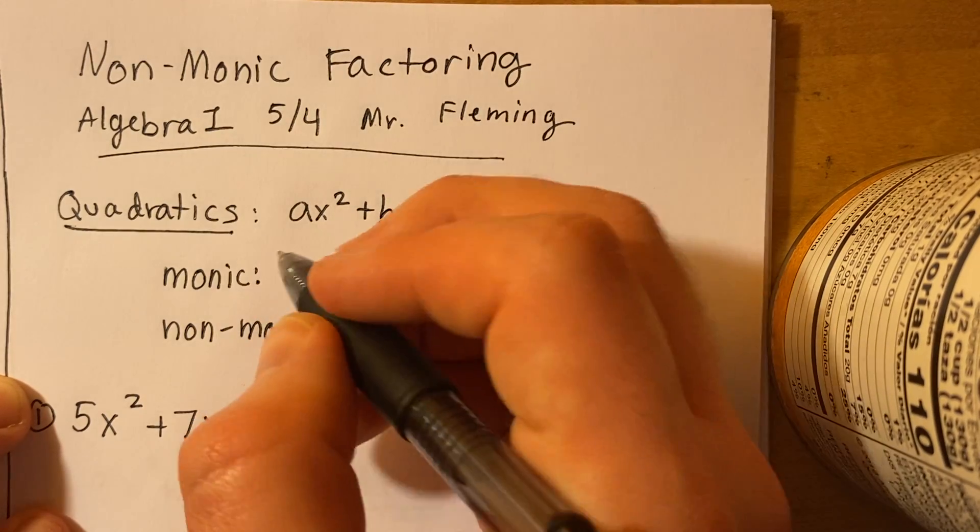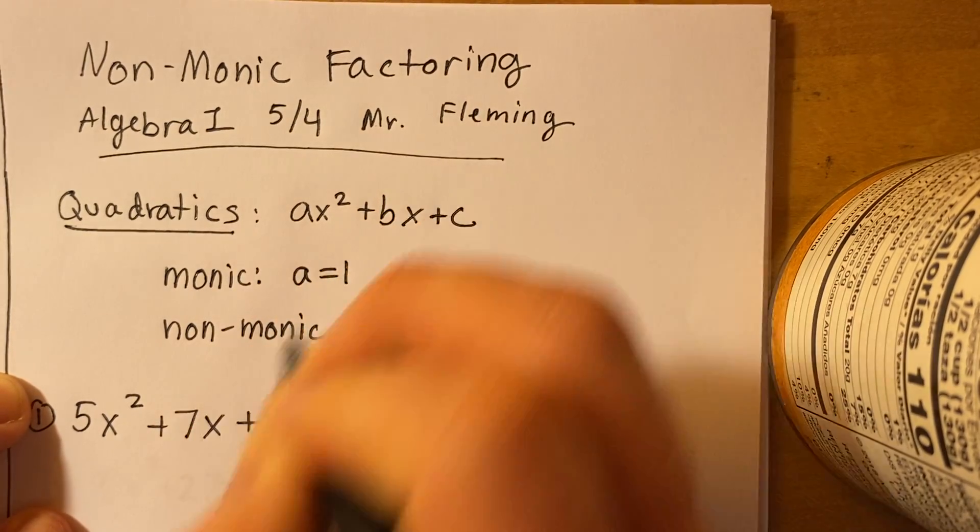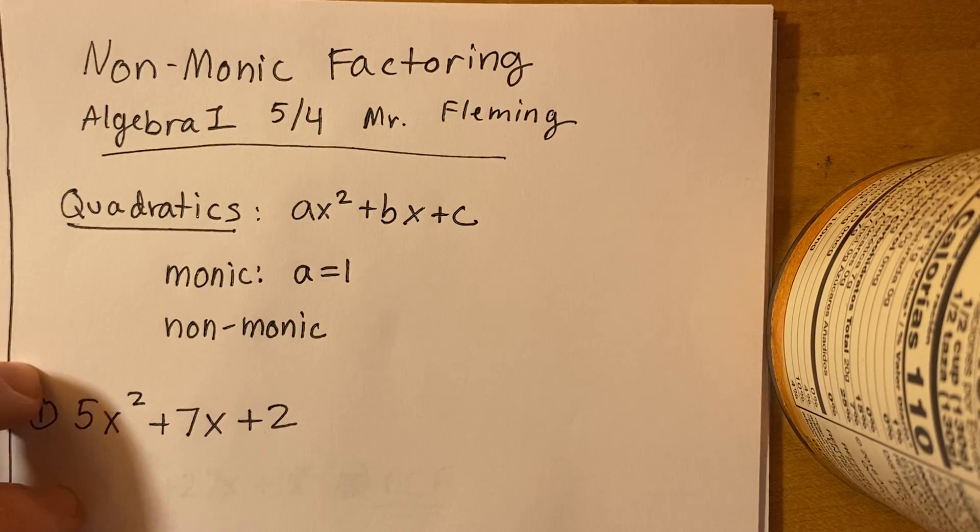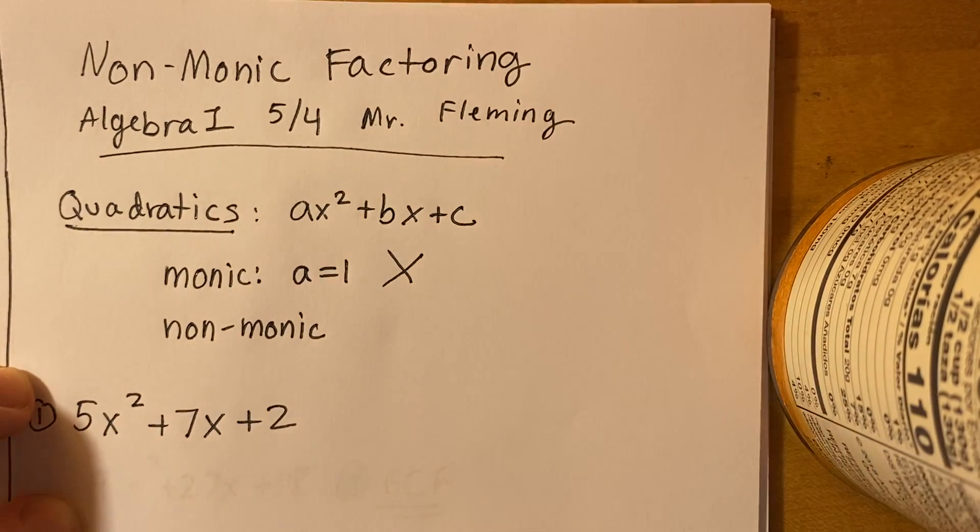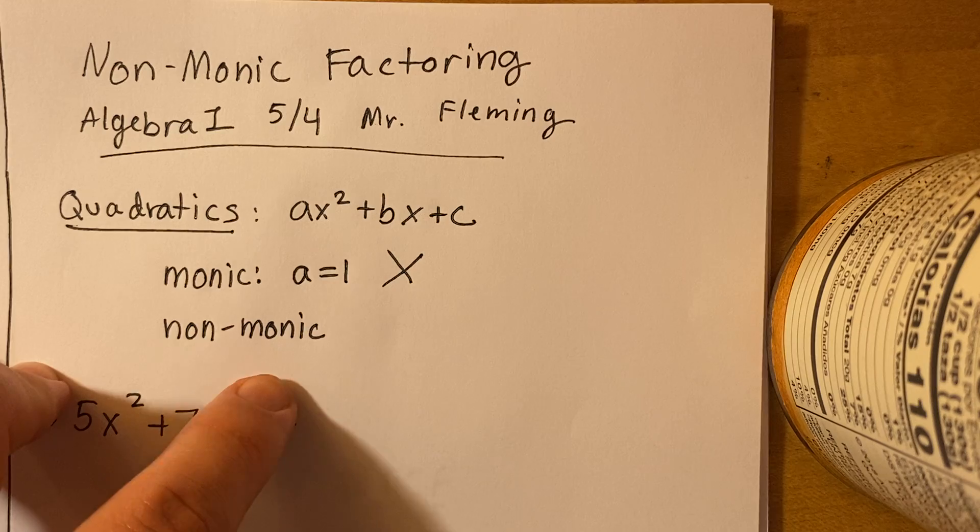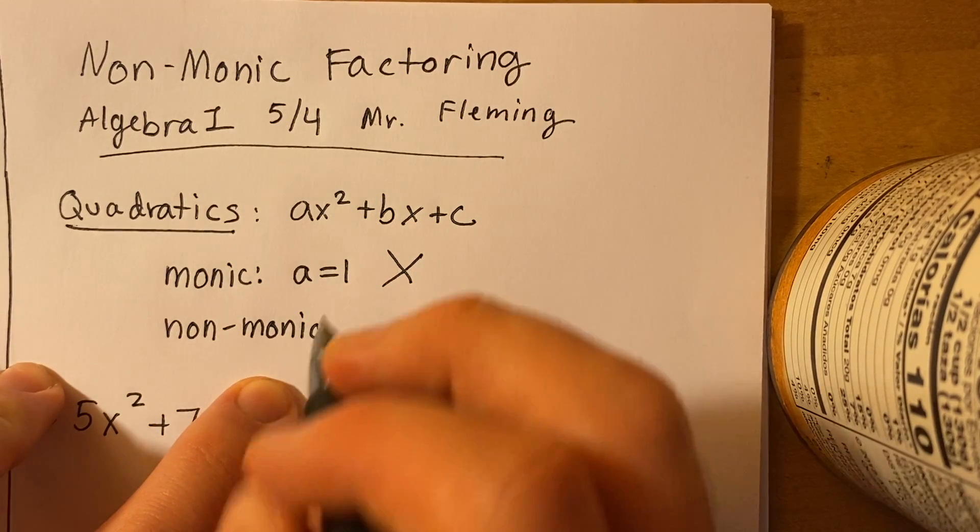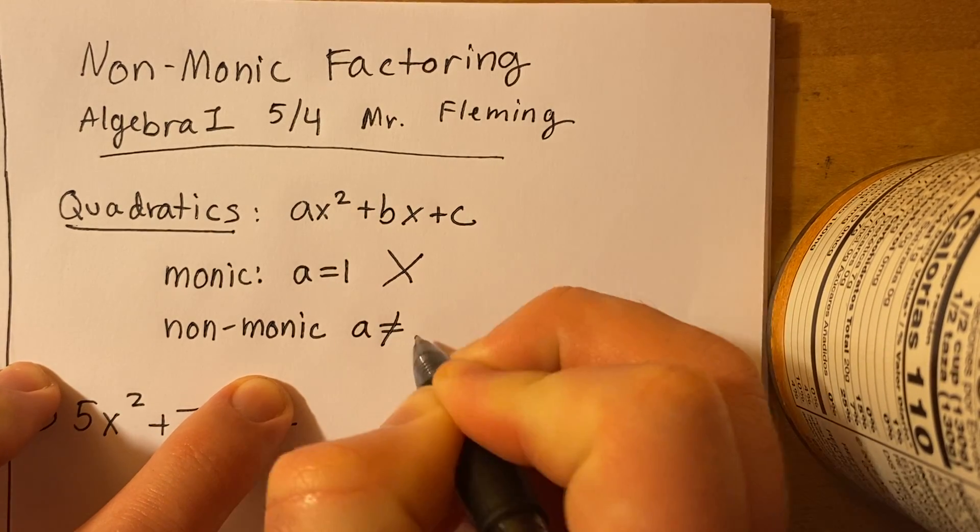Monic just means that a is equal to 1. So the factoring that we were practicing, like with the X method, those are monic quadratics. Now non-monic quadratics means that a is not equal to 1.